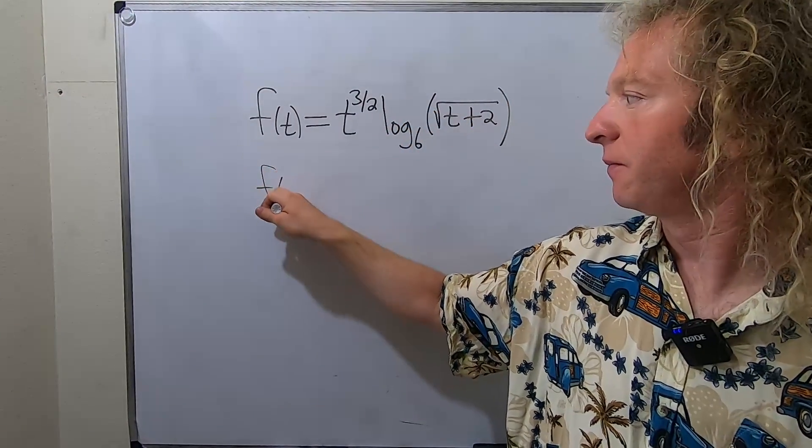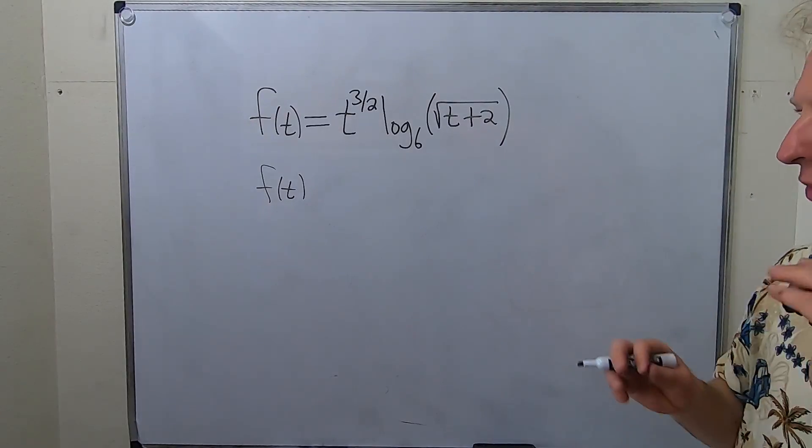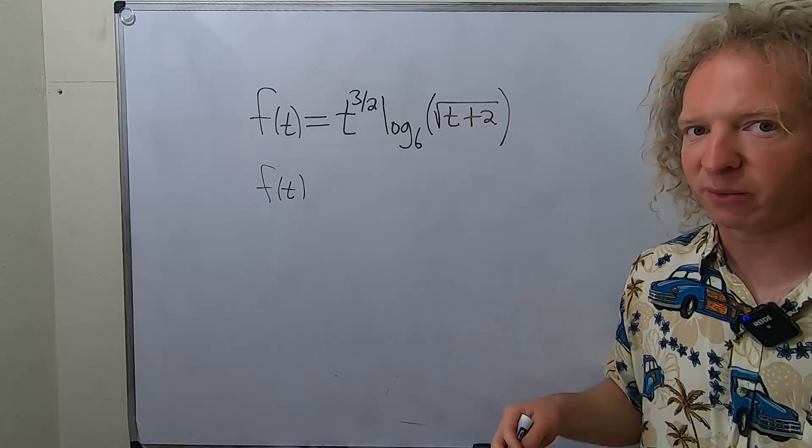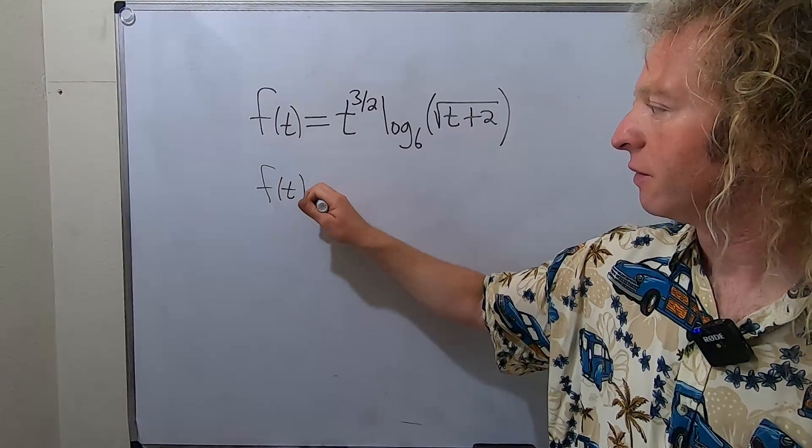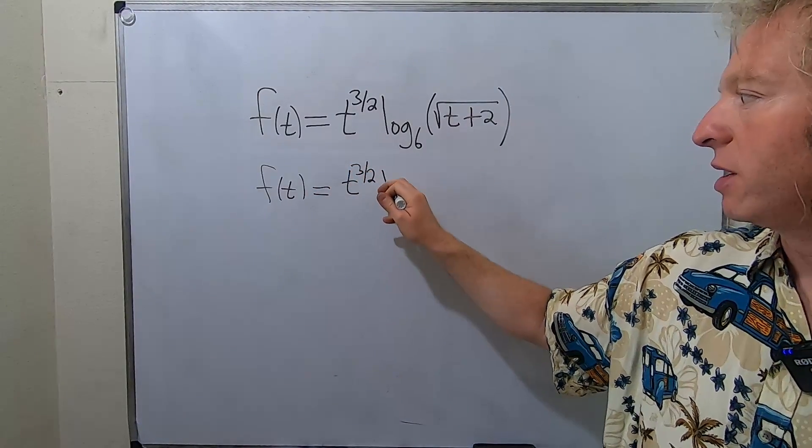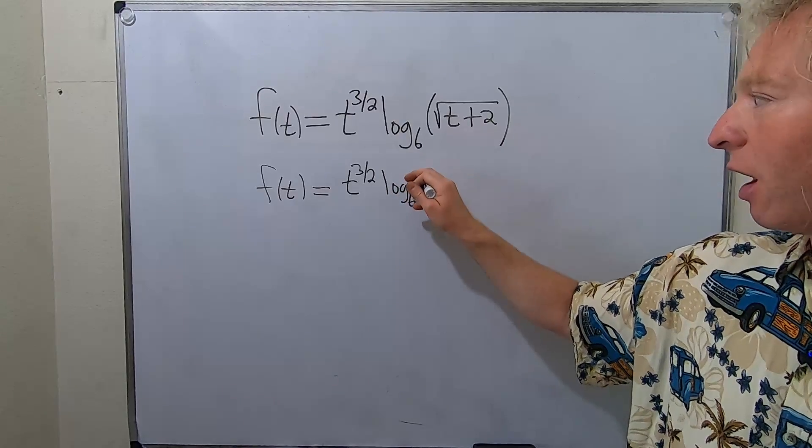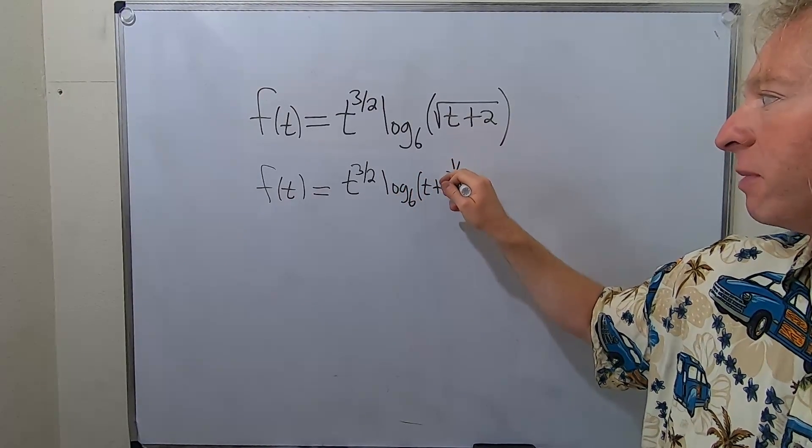So we have f of t and whenever you have logs in a problem you should always think can I rewrite what's inside the log in a convenient way? If the answer is yes then you typically should try to do that. So this is t to the three halves and then we'll write it as log base 6 of t plus 2 and this is to the 1 half power.